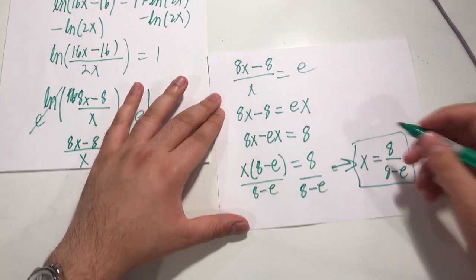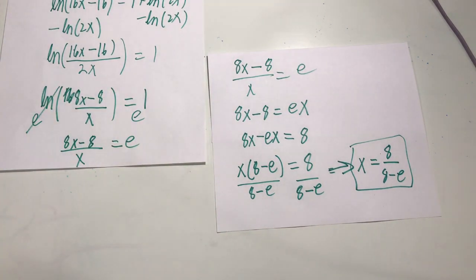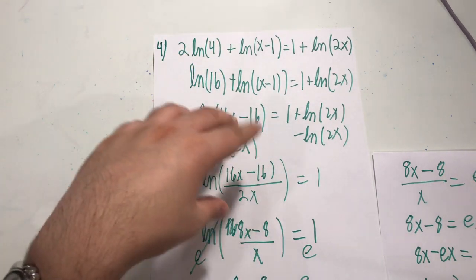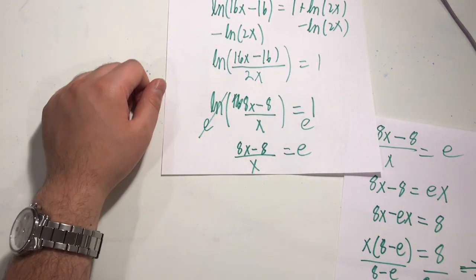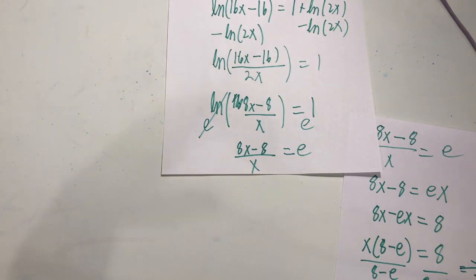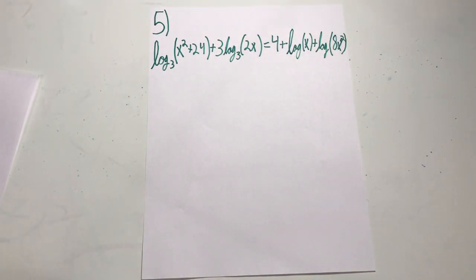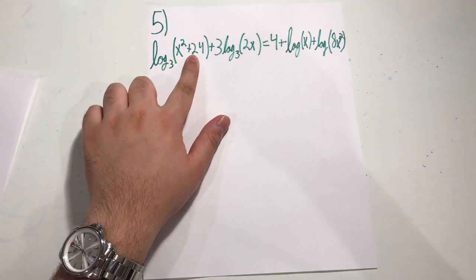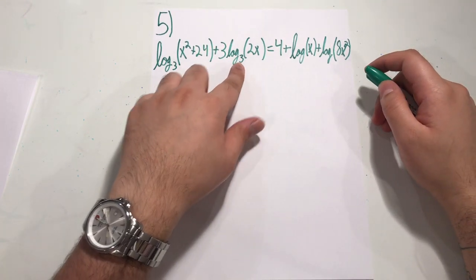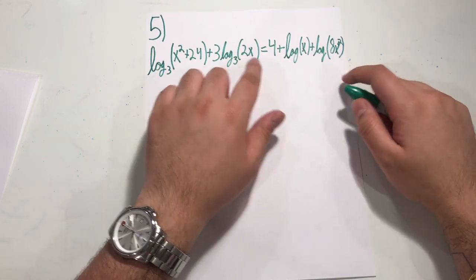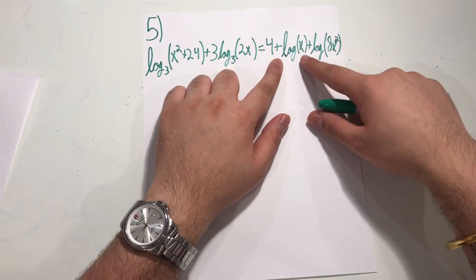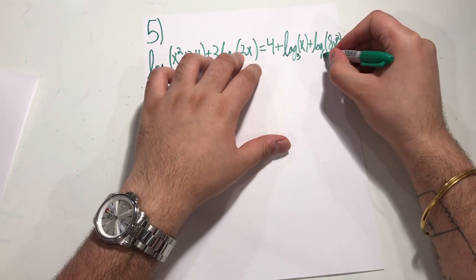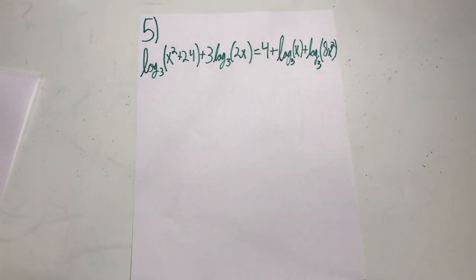Hopefully that wasn't too confusing — I'm really just using the same properties of logarithms from my previous video, and once I eliminate the logarithm it becomes a standard solve-for-x problem. Now for example four: we have logarithm base 3 of x squared plus 24, plus 3 log base 3 of 2x, equals 4 plus log base 3 of x plus log base 3 of 8x squared. Our first step is to condense all the logarithms.